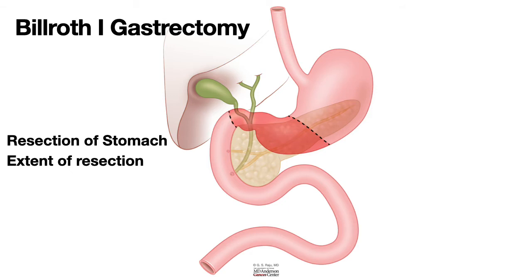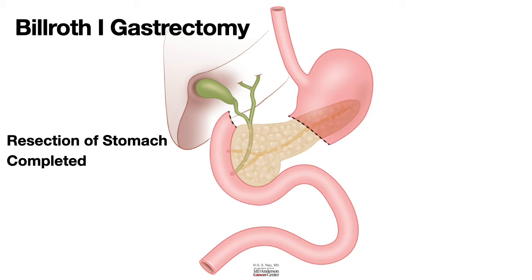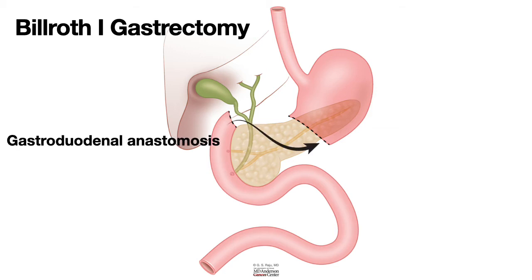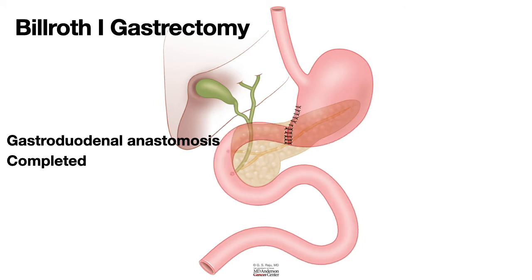In Bilroth-1 gastrectomy, this is the area of the stomach — the distal portion of the stomach will be resected. After the resection is completed, the duodenum is anastomosed to the distal end of the stomach, creating a gastroduodenal anastomosis.